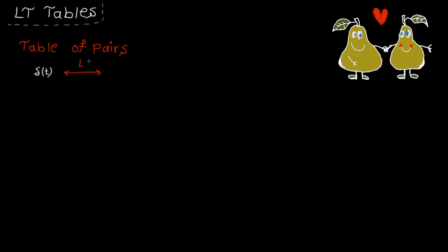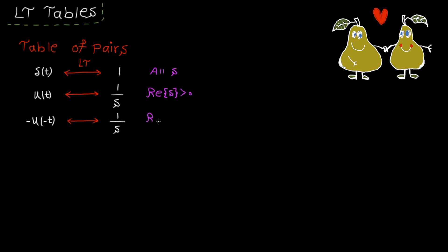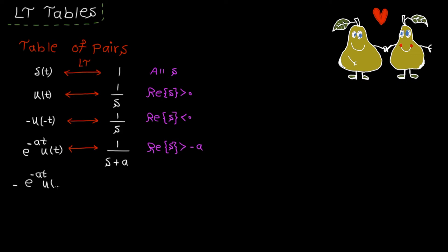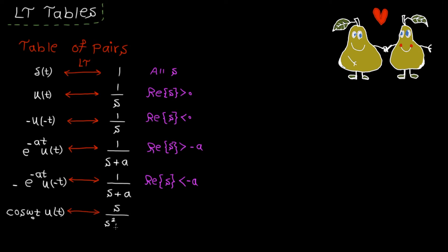The Laplace transform of the impulse function is 1 and the ROC is everywhere. The Laplace transform of u(t) is 1 over s, and the Laplace transform of minus u(-t) is again 1 over s but the ROC is different. The Laplace transform of e^(-at)u(t) is 1 over (s+a). Next signal is cosine(ω₀t)u(t) and finally sinusoidal multiplied by u(t) — here are their Laplace transforms and corresponding ROCs.